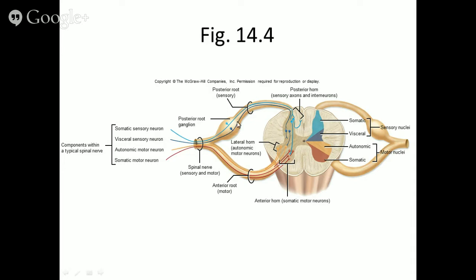Motor information comes out through the anterior root, also known as the ventral root, and goes into its appropriate spinal nerve. So: incoming sensory information enters through the dorsal root, outgoing motor information exits through the ventral root. Now, I'm going to use an old story for an example. I used to have a cat who had some weird habits — one habit was that he loved to play with thumbtacks. He would toss them around the room, carry them in his mouth, and run around with them.